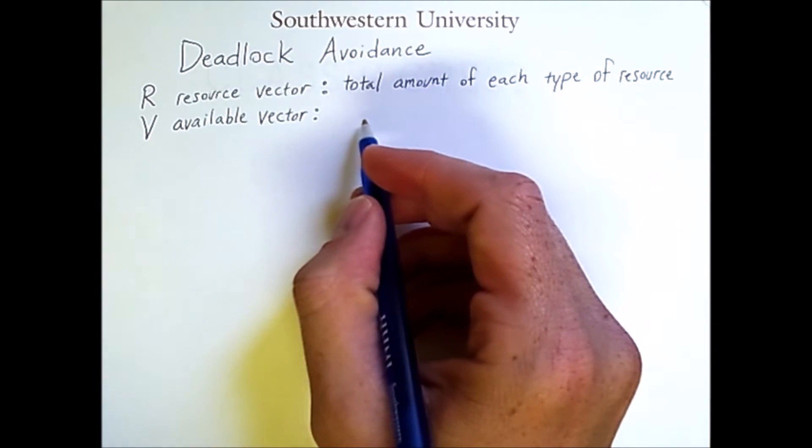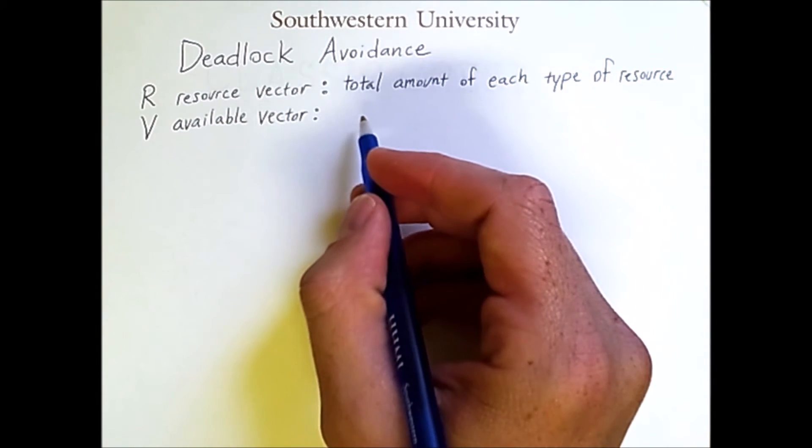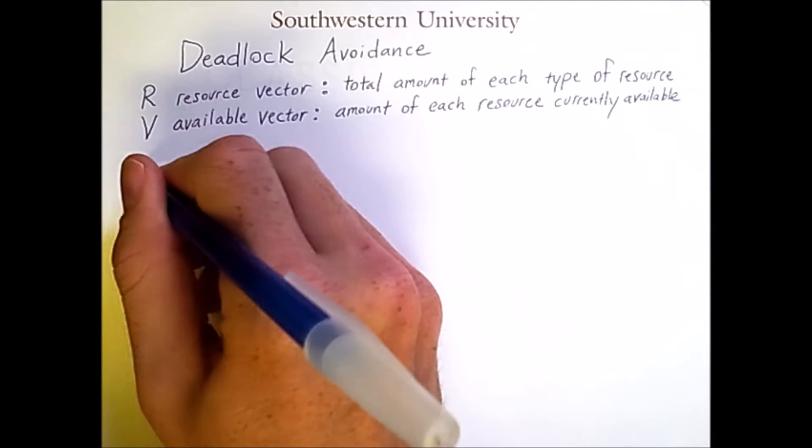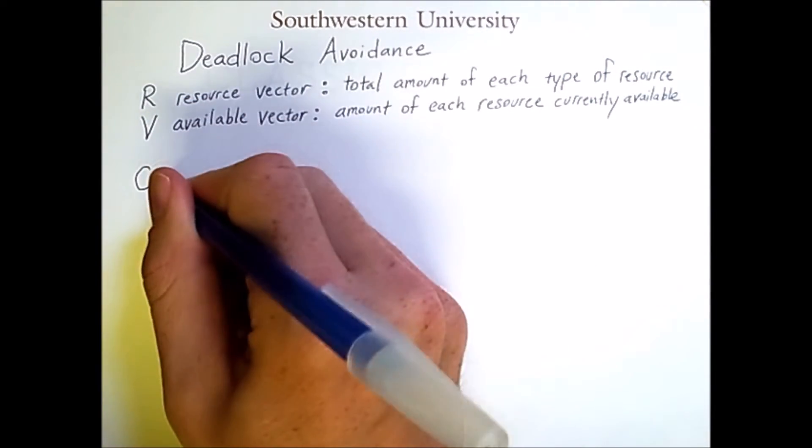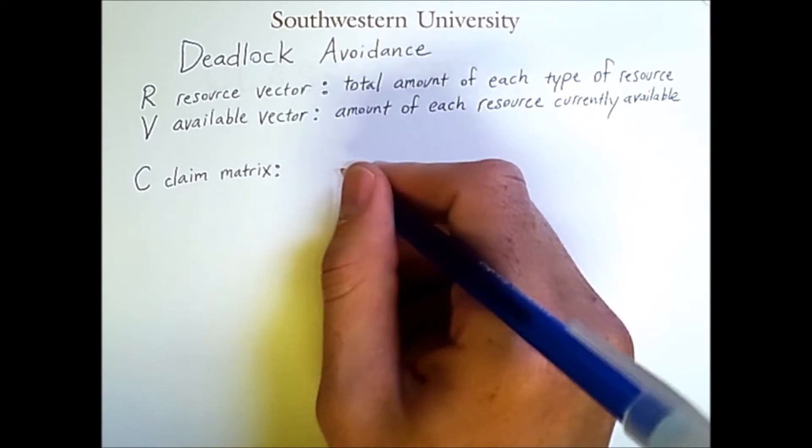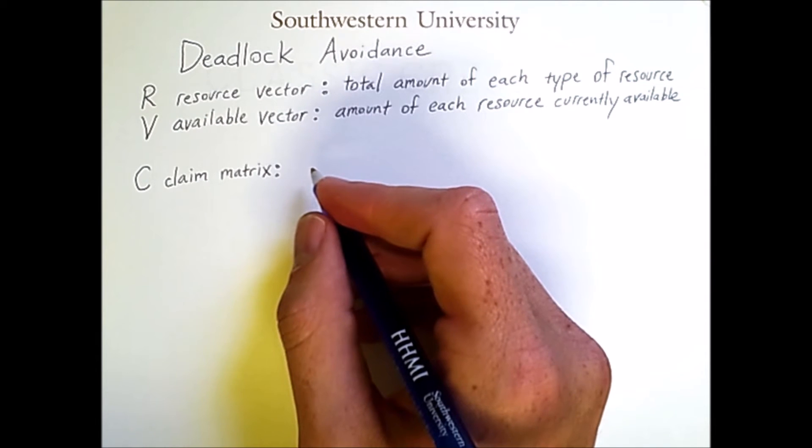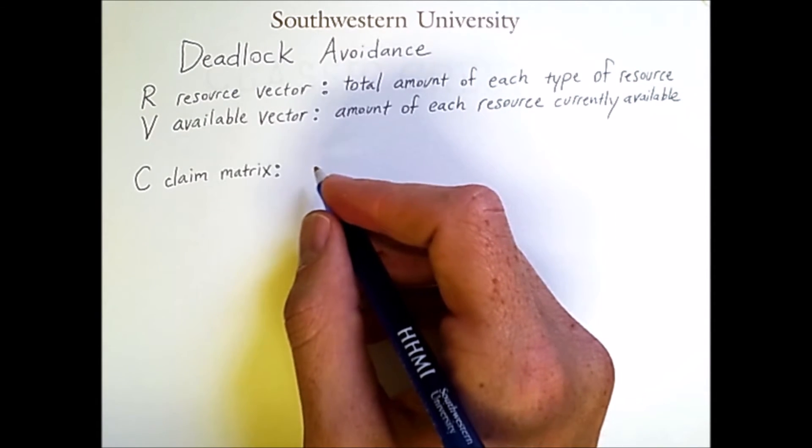This is the amount of each type of resource that is currently available in the system. We also require C, which is a claim matrix. The entries in this matrix indicate how much of a given resource type each process will need at some point.